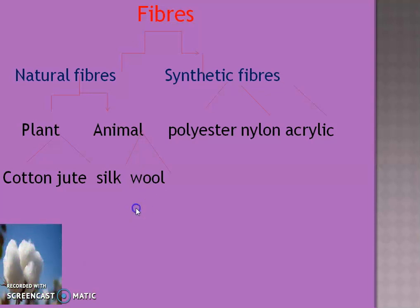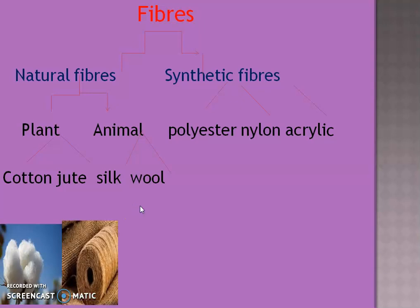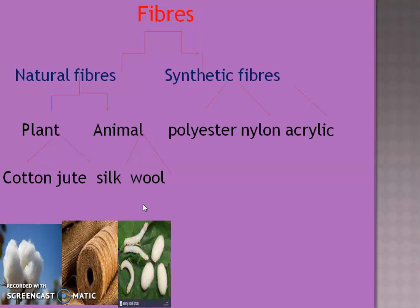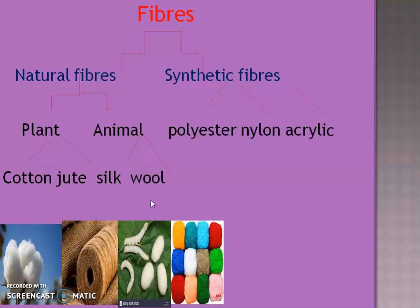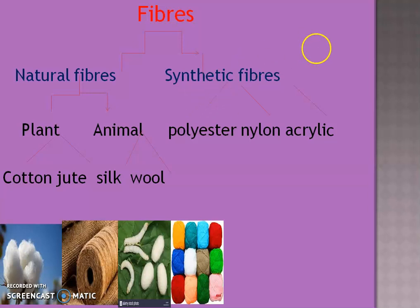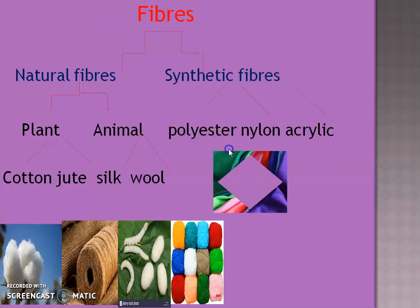Wool is obtained from the fleece of sheep or goat; it is also obtained from the hair of rabbits, yaks, and camels. Silk fiber is drawn from the cocoon of a silkworm. For thousands of years natural fibers were the only ones available, but in the last hundred years fibers are also made from chemical substances not obtained from plant or animal sources - these are called synthetic fibers. Examples are polyester, nylon, and acrylic.